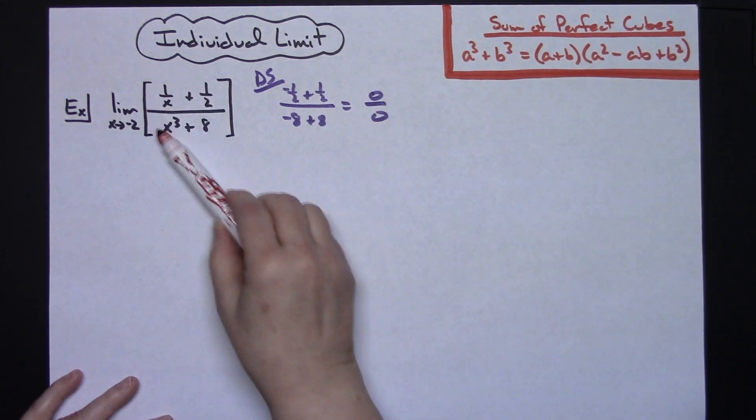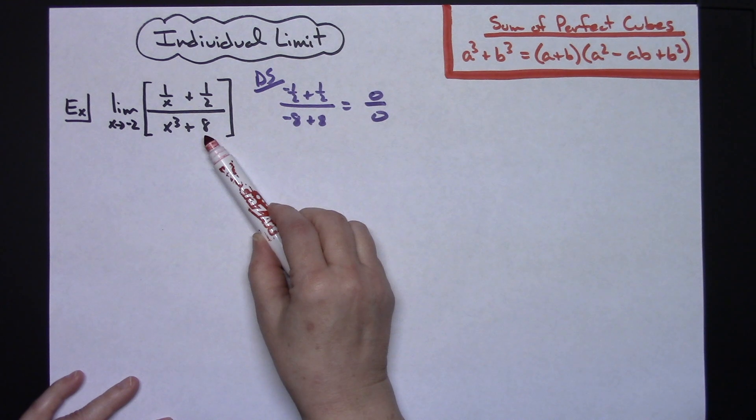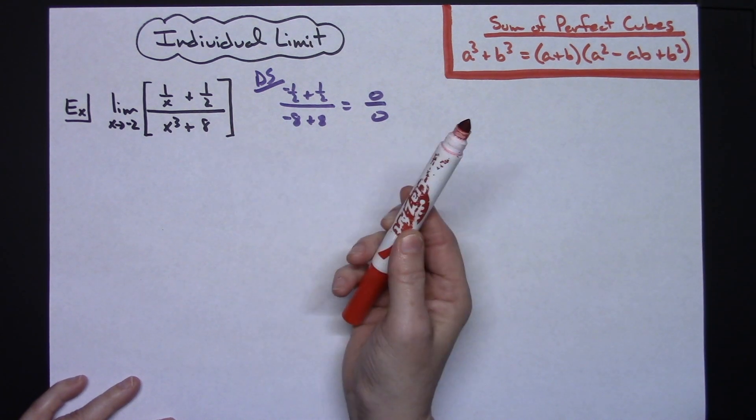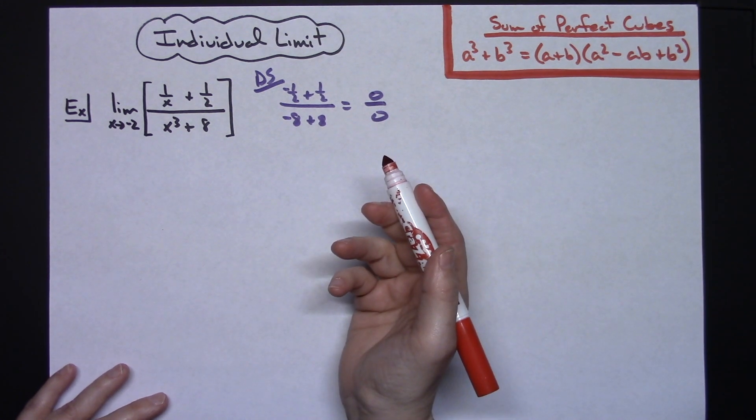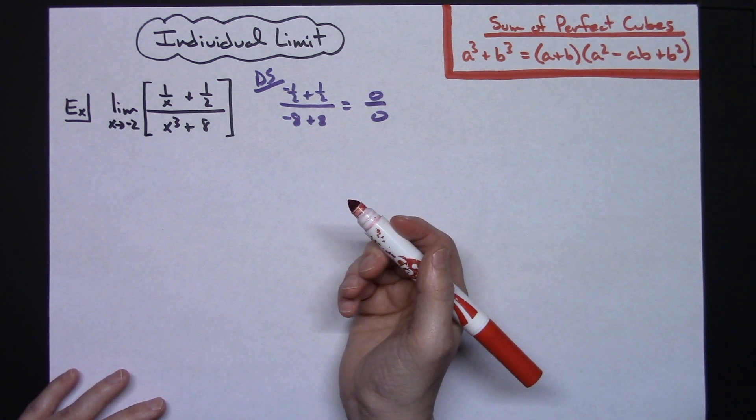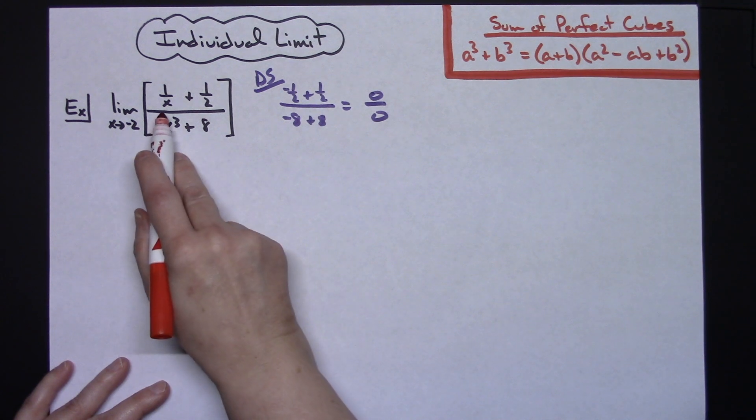What I'm going to do is I'm going to take a look at the function here that I'm trying to take the limit of, and I'm going to see that it's a complex fraction. So the easiest thing to do would be to get rid of that complex fraction, and I choose to do that most of the time by multiplying through by the least common denominator.